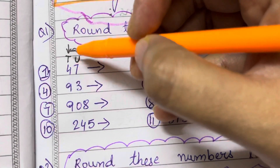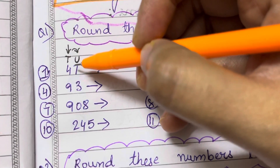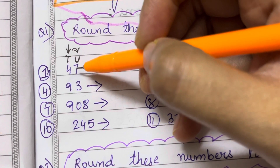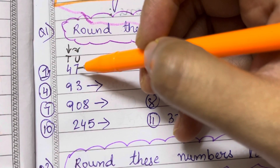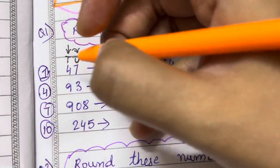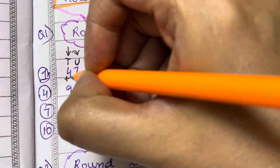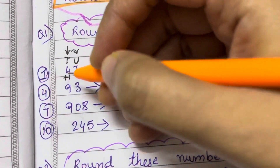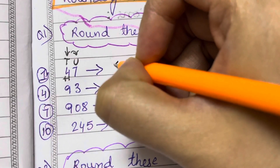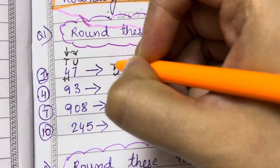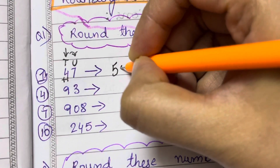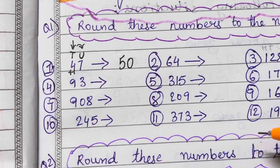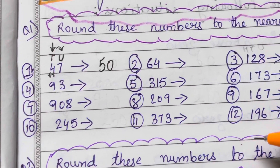The next digit after the tens place is 7, and 7 is more than 5. So we are just going to add plus 1 to the tens place. So 4 plus 1 is 5, and 7 has been rounded off to 0. So your answer is 50.